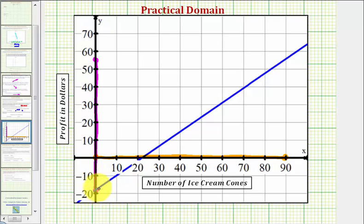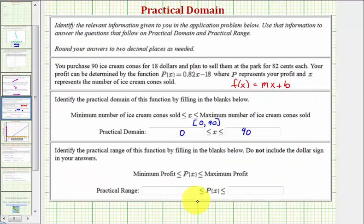Again, the lower bound is the y-intercept, which we know is negative 18. To find the upper bound of the range, we have to substitute x equals 90 into our profit function. Let's go ahead and show how to find both of these.